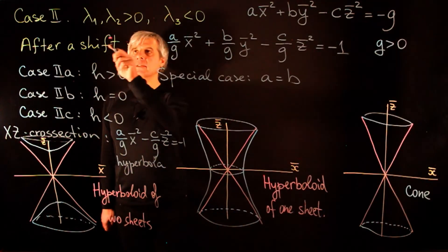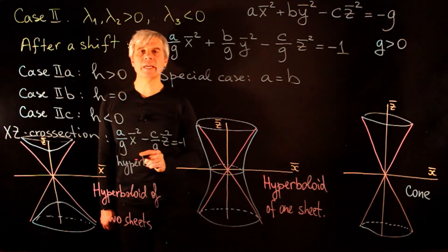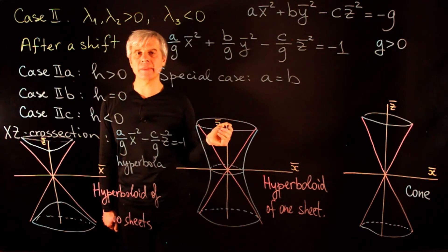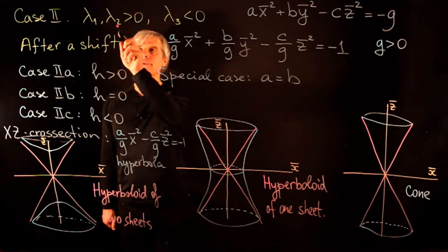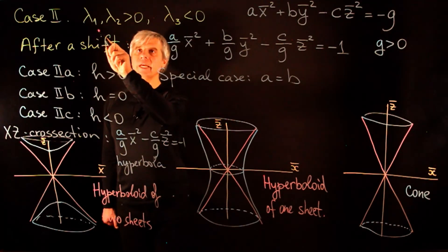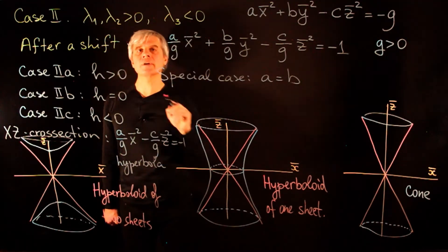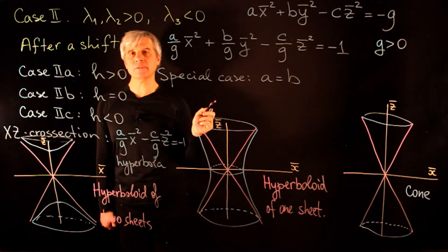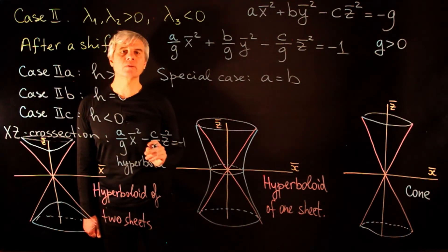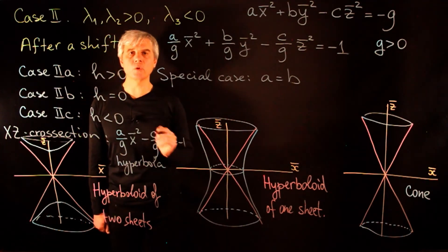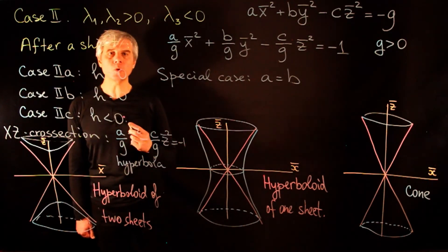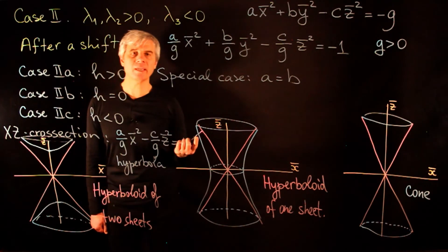If all three eigenvalues are negative, multiplying by negative one reduces to case 1. If one eigenvalue is positive and two are negative, multiplying by negative one reduces to case 2. This completes the classification for the case when all three eigenvalues are non-zero. Next, we go to the rank-two case: two non-zero eigenvalues and one zero eigenvalue.